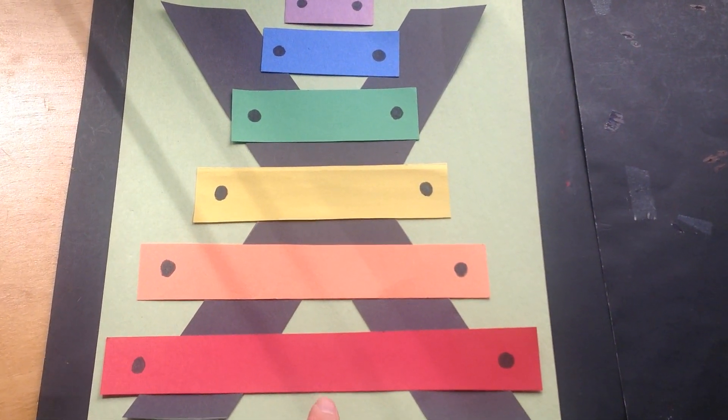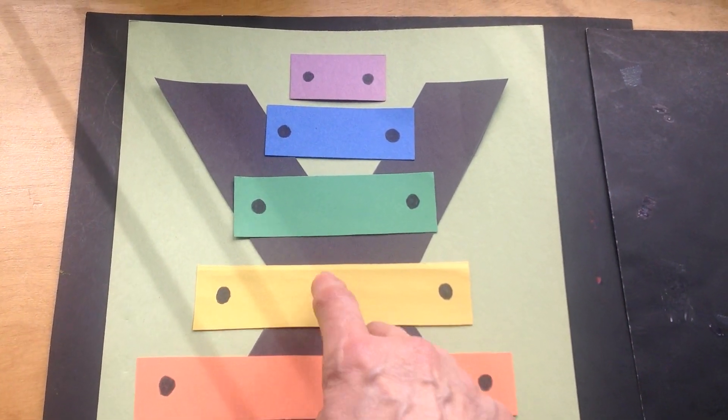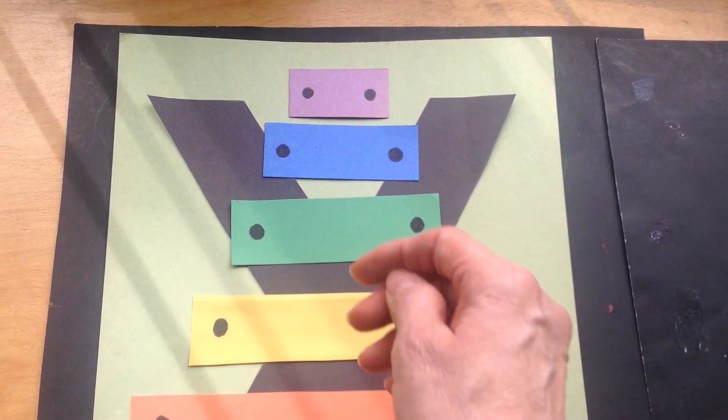Ready to say them in Spanish? Rojo. Anaranjado. Amarillo. Verde. Azul. Morado. Muy bien.